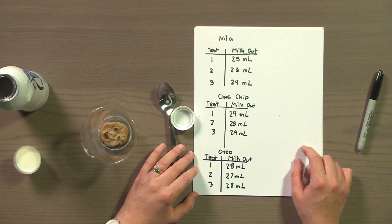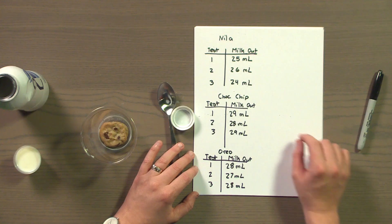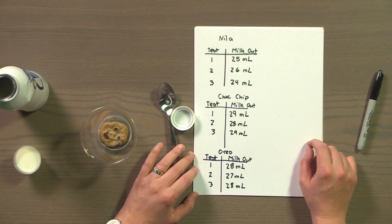So, here's our finished t-charts with our results. By looking at our data, we can now easily see that vanilla soaked up the most milk because it had the smallest amount of milk come out. And we know this because we designed and conducted a great fair test. Thanks for watching this video. Now, if you pardon me, I have some cookies to eat.